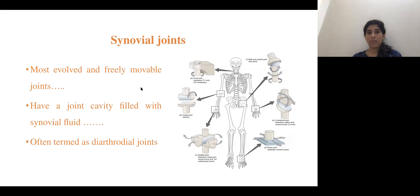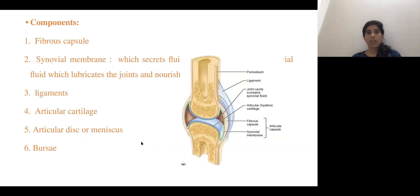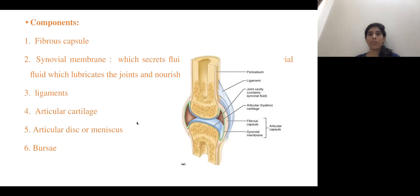The synovial type of joint is almost freely movable and has a joint cavity filled with synovial fluid. It is also called the diarthrodial type of joint. Its components include ligaments, cartilage, menisci or articulating discs, bursa, fibrous capsule, and synovial membrane.